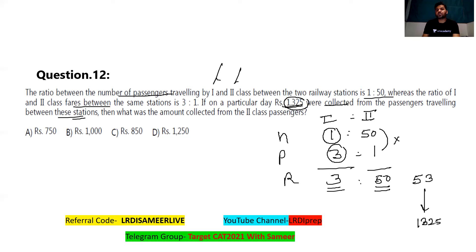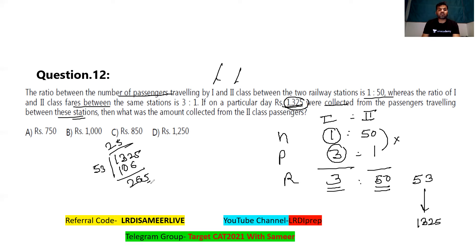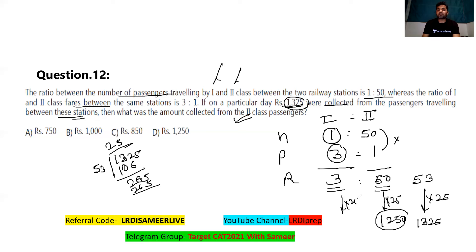On a particular day, 1325 rupees were collected. Dividing 1325 by 53 gives 25 times. So the amount collected from second class passengers is 50 × 25 = 1250 rupees, and from first class is 3 × 25 = 75 rupees. The second class passengers paid 1250 rupees — that is the correct answer.